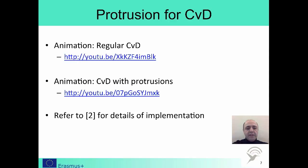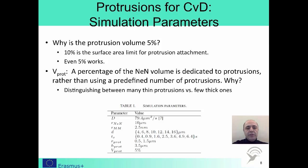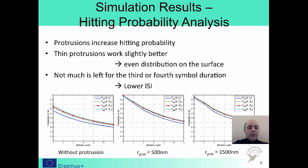You may find the details of the implementation in the second paper in the references section. In our simulations, we have dedicated only 5% of the volume for protrusions. For a fair analysis, we have compared the use of many thin protrusions against fewer thick ones. The total volume of the protrusions is the same in both cases. We analyze the effect of utilizing protrusions on the hitting probability.